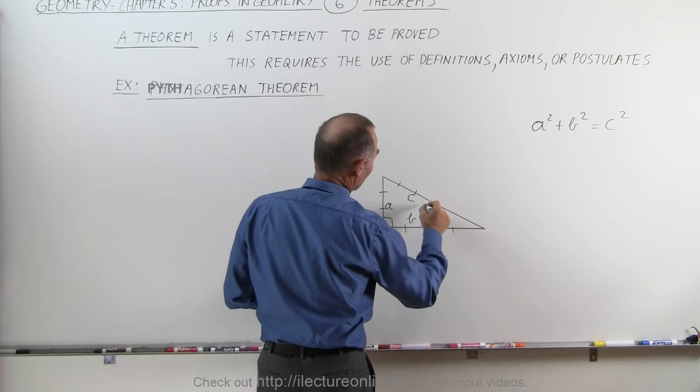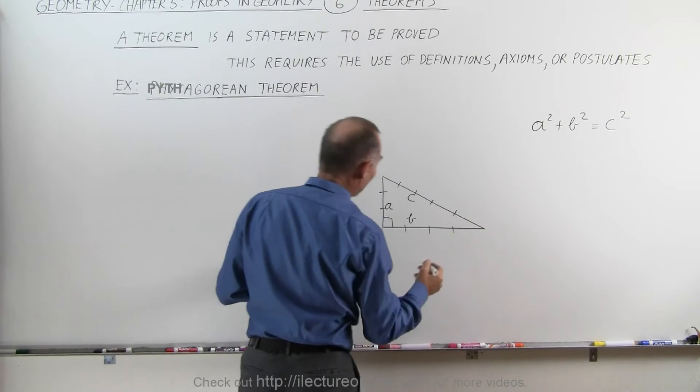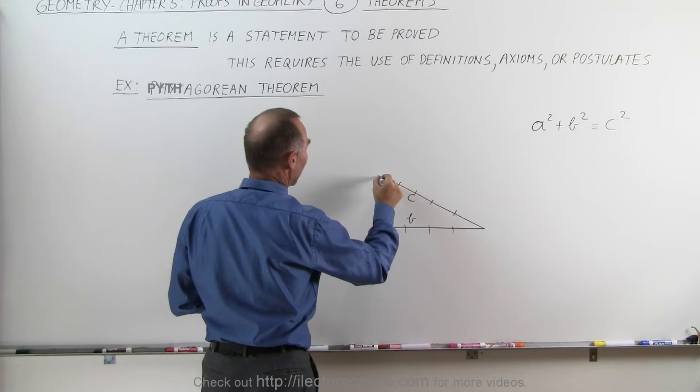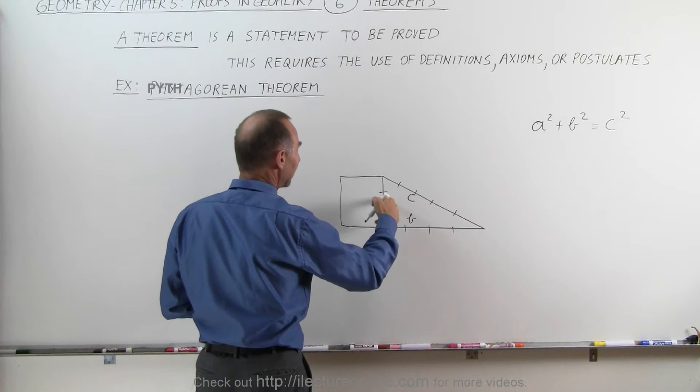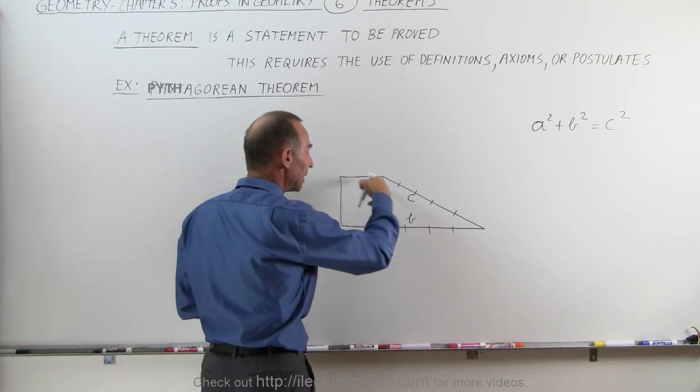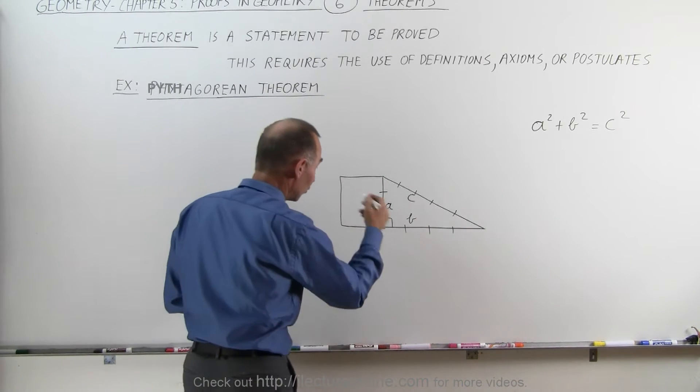And one way to show that graphically is to go ahead and represent each side as a square. Notice that if we take A times A, that's A squared, that would be the area of this square.